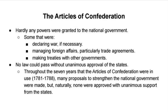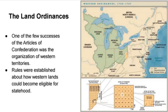One of the few successes of the Articles were the land ordinances, particularly the Northwest Ordinances. It really was an organization of how the territories that had yet to become states — unorganized territories — what kind of population thresholds would be necessary before they would reach statehood, and what the organization of counties within those states would look like. So this was one success of the Articles of Confederation.